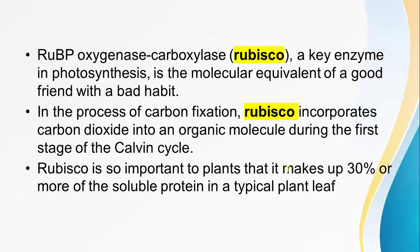In the process of carbon fixation, Rubisco incorporates carbon dioxide into an organic molecule during the first stage of the Calvin cycle. As we have learned in the C3 pathway, Rubisco — ribulose bisphosphate carboxylase, not oxygenase — binds with carbon dioxide. In the presence of the enzyme ribulose bisphosphate carboxylase, they produce the 3-carbon compound known as 3-phosphoglycerate. This is the normal process in the C3 pathway, which is known as the Calvin cycle.